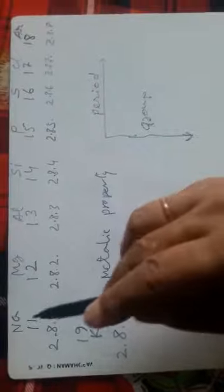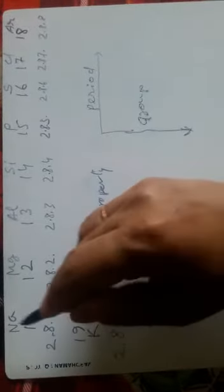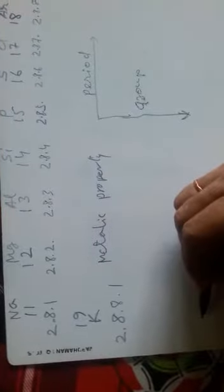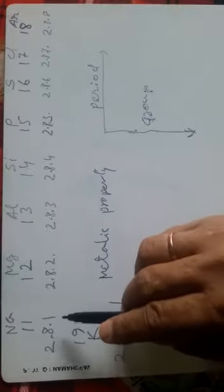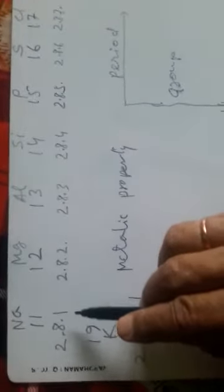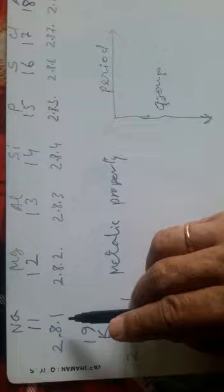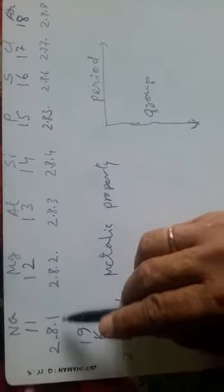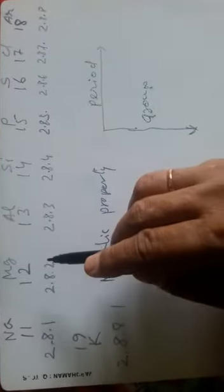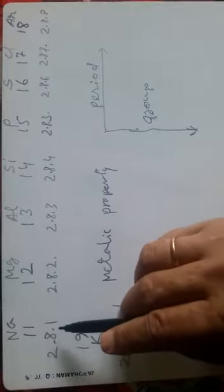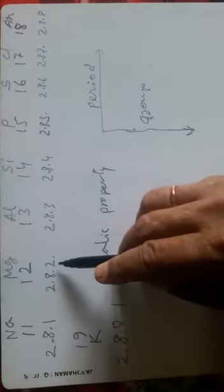And in groups, metallic property increases from top to bottom as the number of orbits increases. In any period, say for this period, sodium and magnesium - sodium has more tendency to easily release the loosely bound outer electron than magnesium. So sodium is more metallic than magnesium.